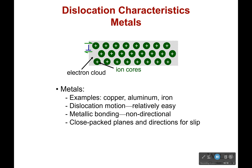Dislocation motion is relatively easy for metals. Why? Because metallic bonding is non-directional. These atoms really don't care about each other directly because of the electron cloud. All of these atoms are technically bonded because it's non-directional bonding — this one's connected to that one, that one's connected to this one. They're all connected to each other, and so when it moves it's not really changing anything, it just slightly changes location.